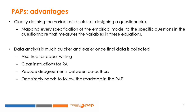Because impact evaluation studies are time-intensive — PEP-PERI projects last for 18 months — having a PAP is useful to keep track of the enormous amount of information gathered and organize it efficiently during the months between baseline and end-line data collection. Clearly defining the variables will be useful for designing a questionnaire. Mapping every specification of the empirical model to the specific questions in the questionnaire will limit omissions — for example, once data is collected, if you forgot to ask a question, it is too late. With a PAP, data analysis is much quicker and easier once the final data is collected.